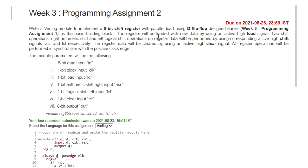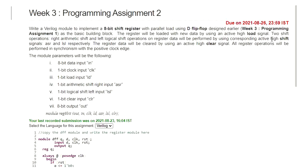The register will be loaded with new data using an active high signal called load, and two shift operations are to be performed: arithmetic right shift and left logical shift. These operations will be performed using corresponding active high shift signals — ASR for arithmetic shift right and LSL for logical shift left. The register data will be cleared using an active high clear signal, and all register operations will be performed synchronously with respect to the clock signal.